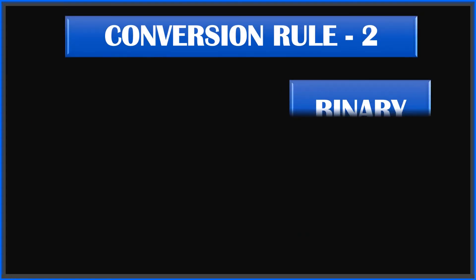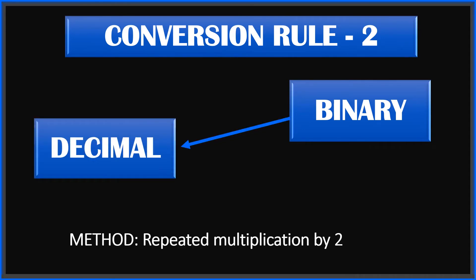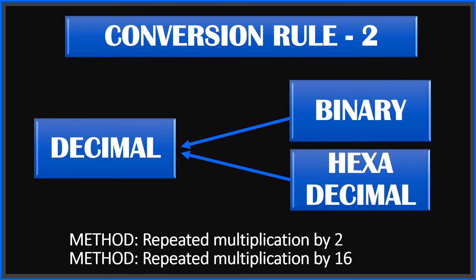Conversion rule number two: if you are going from binary to decimal, you will use repeated multiplication by two — opposite to division. If you were going from decimal to binary it was repeated division by two; now binary to decimal uses repeated multiplication by two. Similarly, if you are going from hexa back to decimal, you will also use repeated multiplication, but this time with 16.